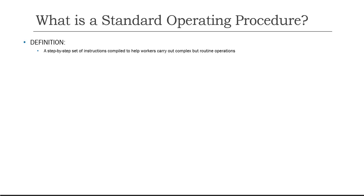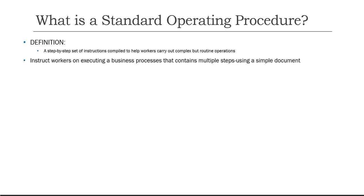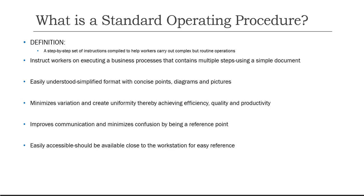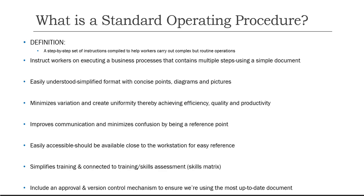So what is the standard operating procedure? By definition, it's a set of instructions laid out step by step to help us complete complex processes. It helps to instruct us in business processes that contain multiple steps by putting it all in a single document. The format has concise bullet points and pictures. It minimises variation, thus improving our business. It can be used as a reference point to improve communication. It should be easily accessible and available at the workstation. It can play a significant part in training and skills. And by using a controlled version component, we're assured that we're using the correct version.